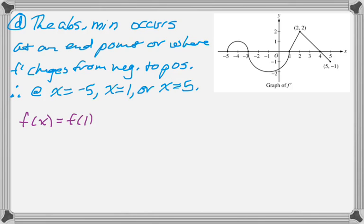So f of x is an accumulation function. It's f of 1 plus the integral from 1 to x of f prime of x. And we know f of 1 is 3, it's given. So we can do this.